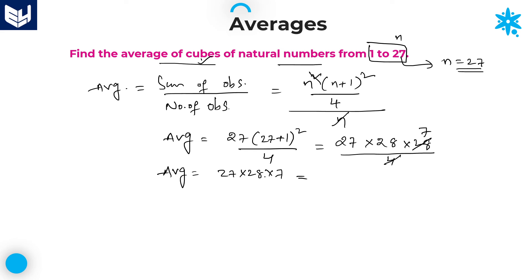From an examination point of view, for these kinds of calculations you can use the units place digits to verify. 7 × 7 = 49 and 9 × 8 = 72, so the units place digit must be 2. Since we don't have options in this problem, calculate directly. 27 × 7 = 189, then compute 189 × 28.